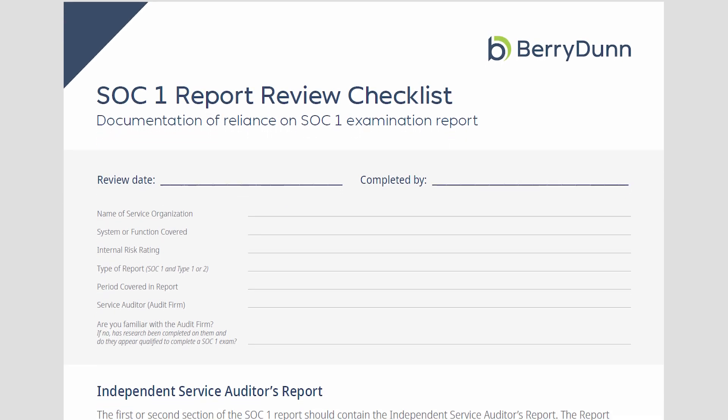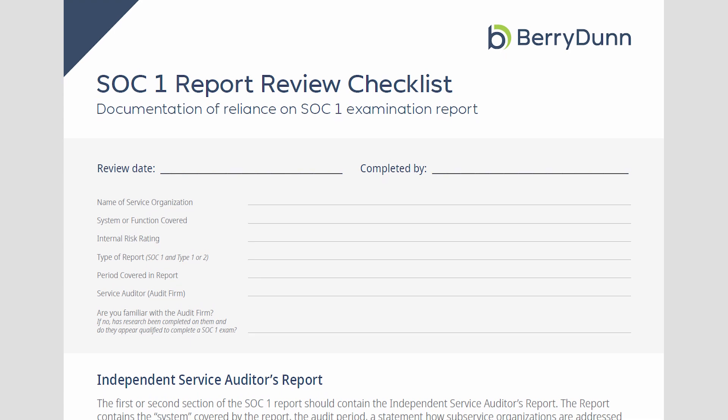Name of the service organization, what's your risk rating if you have an internal risk management program that has designated a third-party risk level. Then, what type of report — a type 1 or type 2. A type 1 report is a point in time, meaning that it's not over a full spectrum of a year or six months. It's as of.